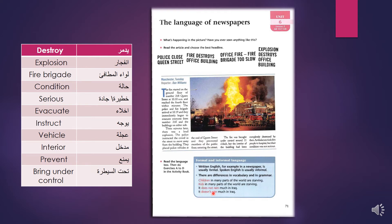That was a difference in vocabulary — between 'children' and 'kids.' Now look at the difference in grammar: in formal written English, you write 'it does not rain much in Iraq' — the full form. In informal spoken English, you would say 'it doesn't rain much in Iraq' — using the contracted form. So contractions are typical of informal language.